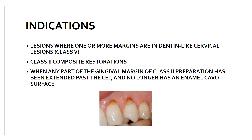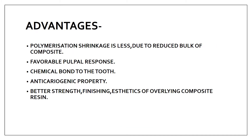The indications for using the sandwich technique are: class 5 restorations, class 2 composite restorations, and cases where the gingival margin of the class 2 preparation has extended past the cemento-enamel junction. These are the three indications of the sandwich technique.